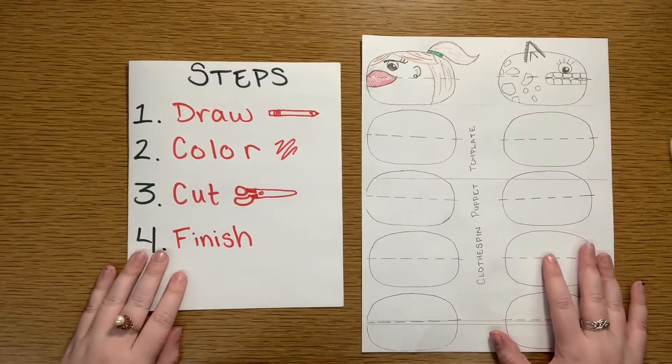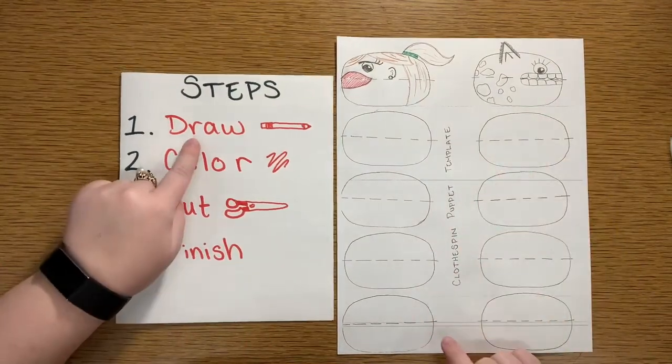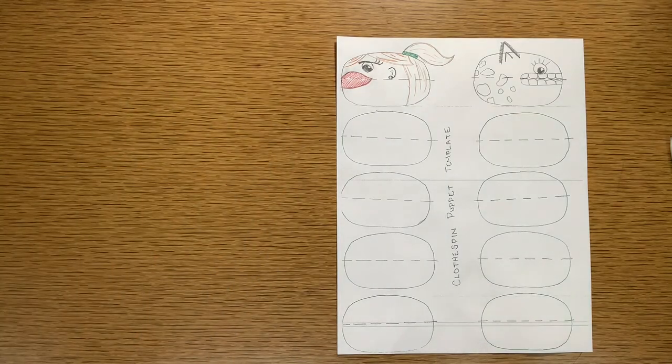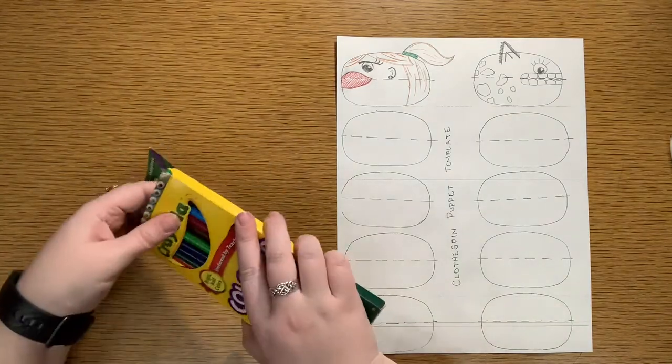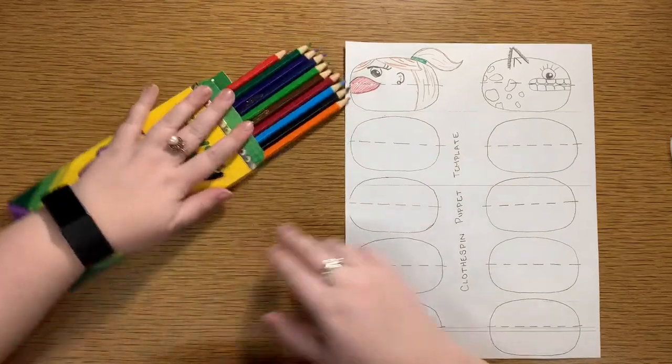Now, if we look back at our steps, I'm pretty happy with that. So, I finished my draw step and now I'm going to color. I'm going to get out my colored pencils and add some color to this.